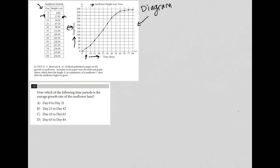So question 12 says, over which of the following time periods is the average growth rate of the sunflower the least? Okay. So we can definitely look at the graph, I think, as a better visual representation for that. But you could use the table as well.